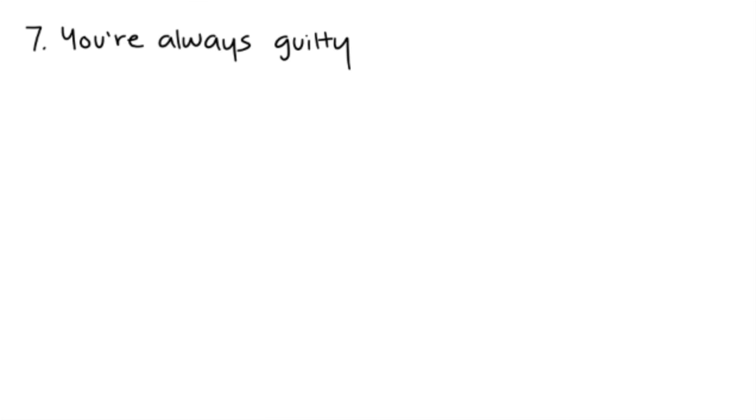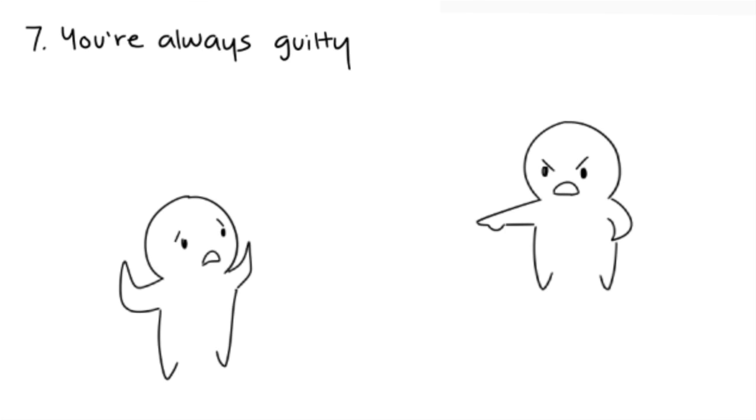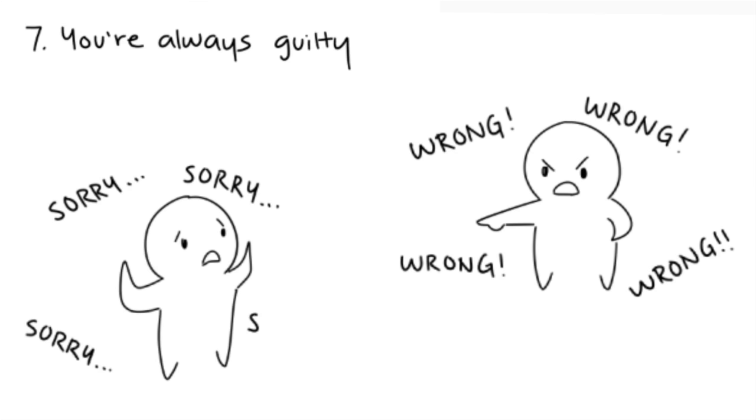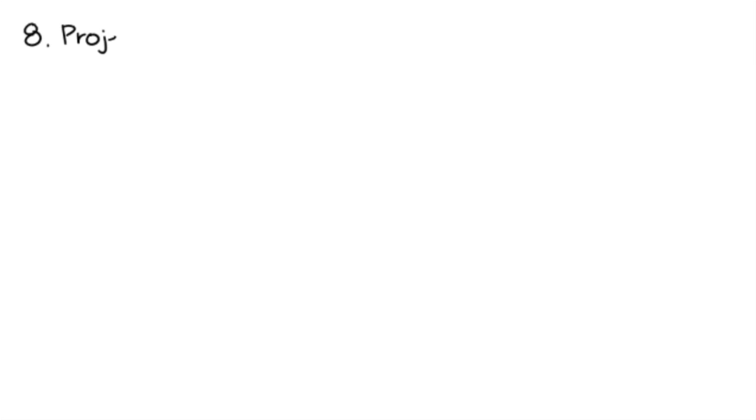Your partner might make a comment about how ugly and gross the other person's clothes are. And if you confront them, they'll accuse you of being paranoid and play the victim. Seven: you're always guilty. You're the one at fault for every mishap and your partner will never admit when they're wrong.